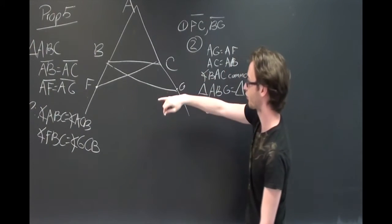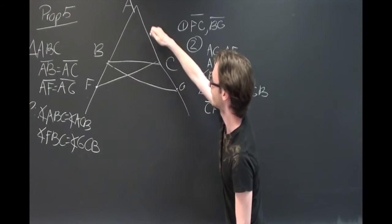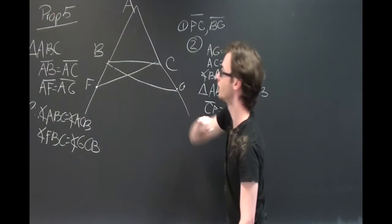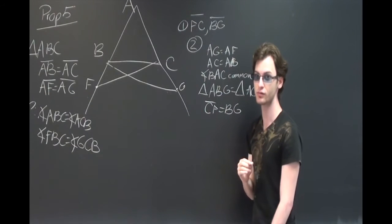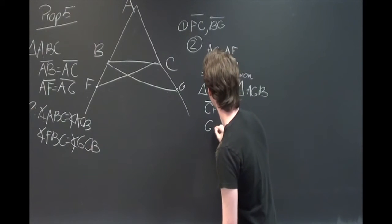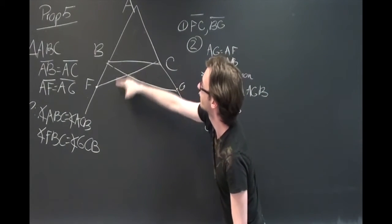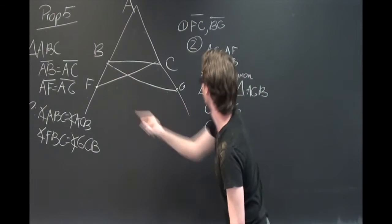And since from the earlier triangle, we know that AG is equal to AF and AC is equal to AB, we know when we subtract equals from equals, we get equals. So, AG minus AC is CG, and that will be equal to AF minus AB, which is BF.